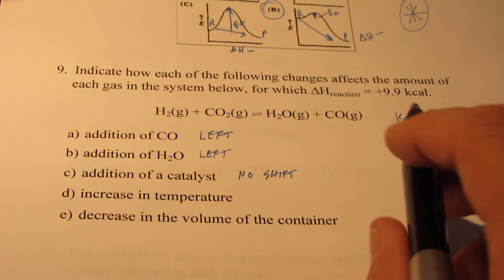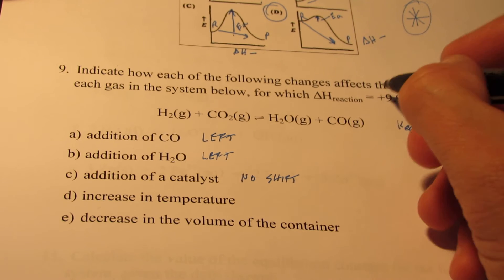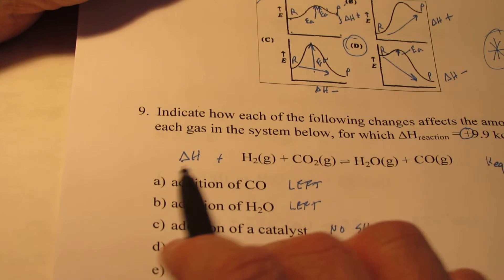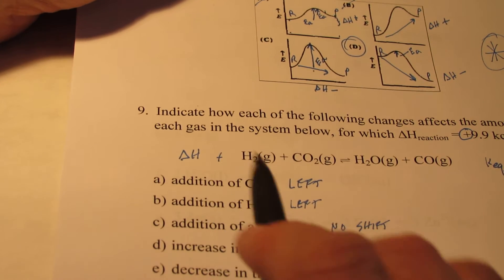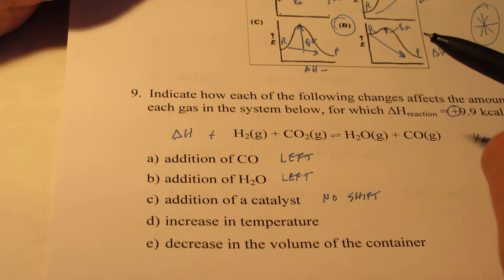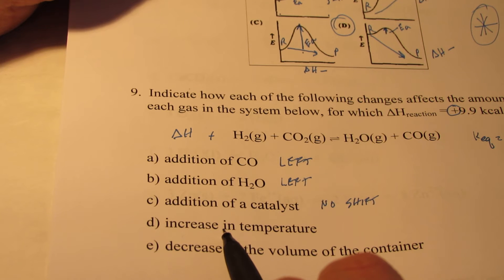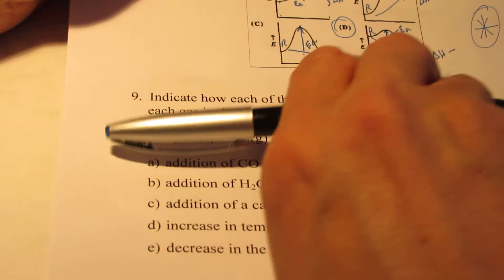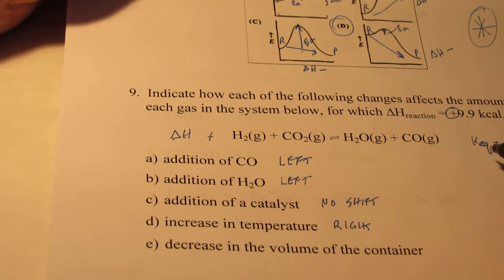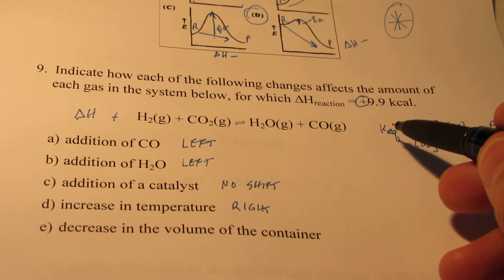Changing temperature will actually change the expression constant and shift the equilibrium at the same time. This reaction has a positive delta H — that means heat is a reactant; it's endothermic. So if I increase the temperature, using our analogy of that little girl who's hot or cold near a fire — we're increasing the temperature on her, she's going to get hot, so she's going to run away from the fire and shift to the right. When there's a temperature change and it shifts to the right, the equilibrium constant will get slightly bigger — that's the only variable that can change the value of the equilibrium constant.